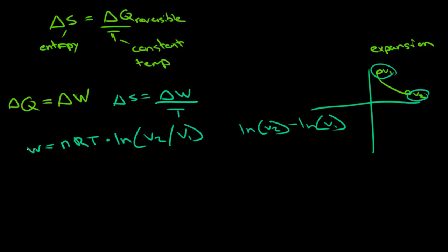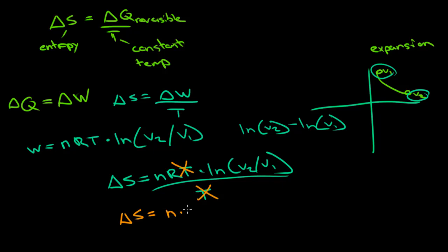So now that we plug this into delta S, all we have to do is delta S equals nRT times ln of V2 divided by V1 over the temperature. Because the temperature is constant, this cancels out with this. So actually, the change in entropy of an isothermal process is just n times R times the natural log of V2 divided by V1.